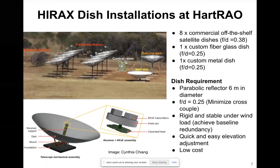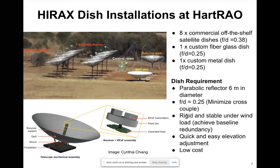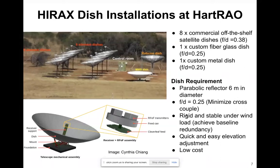That green structure is our control room for the final dish. In terms of dish requirements, the dish should be six meters in diameter. The focal ratio should now be 0.25 — not 0.23 — so that we can minimize cross-coupling between antenna elements. The dish should also be rigid and stable, because at Karoo there will be wind loading.